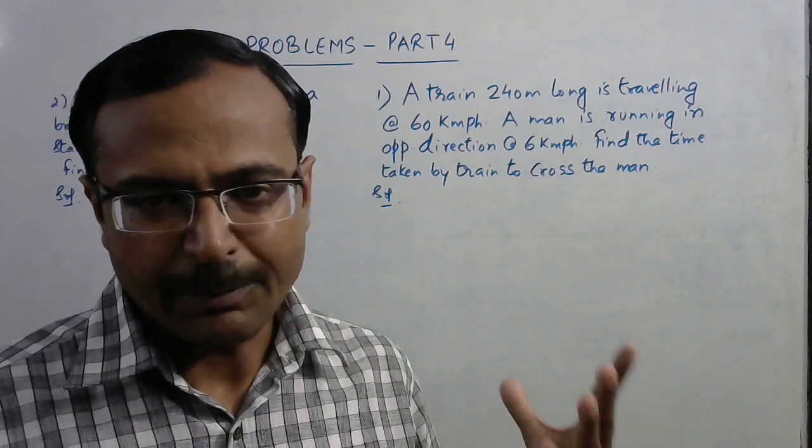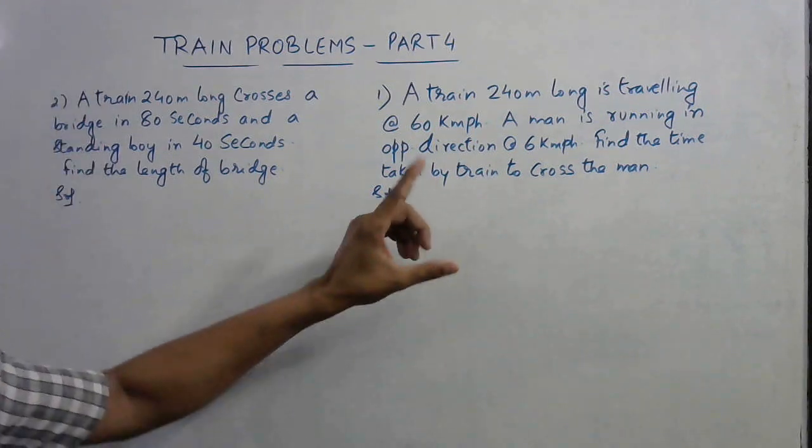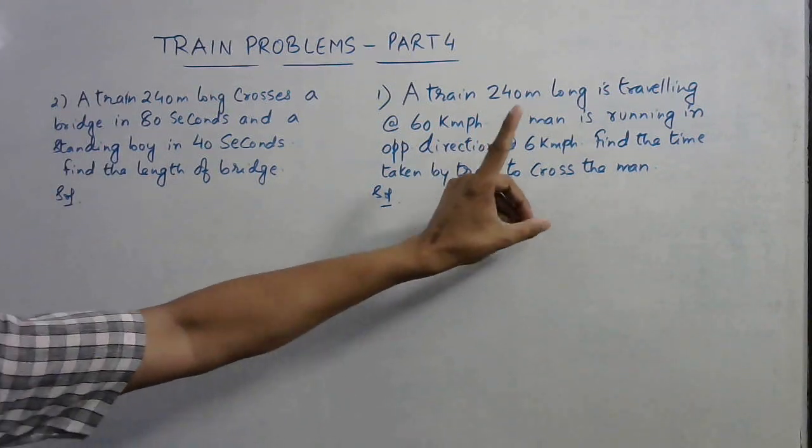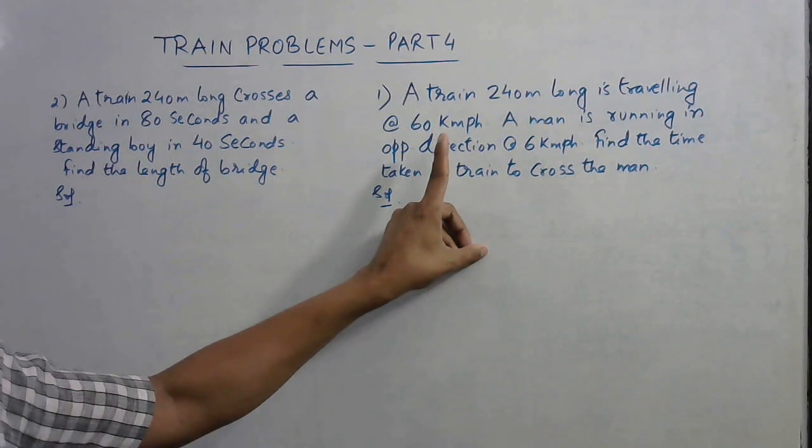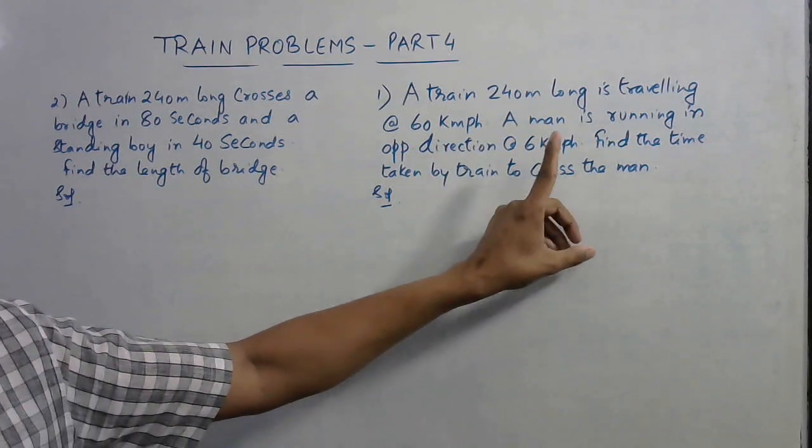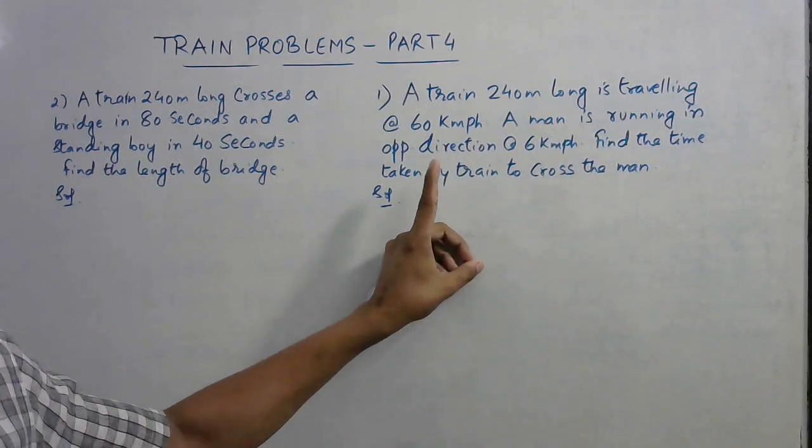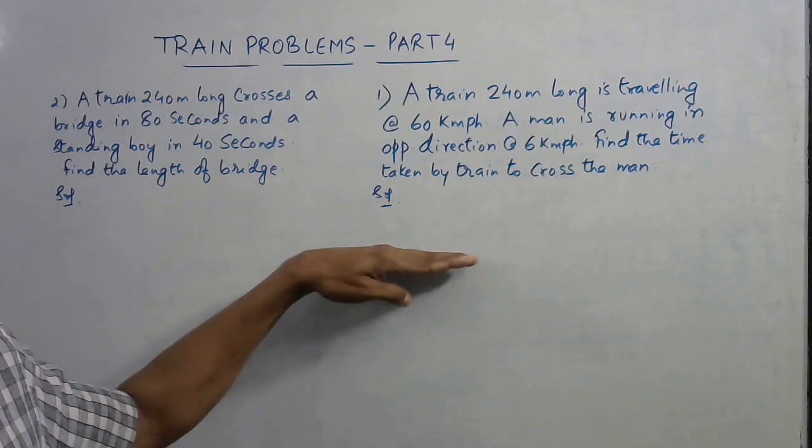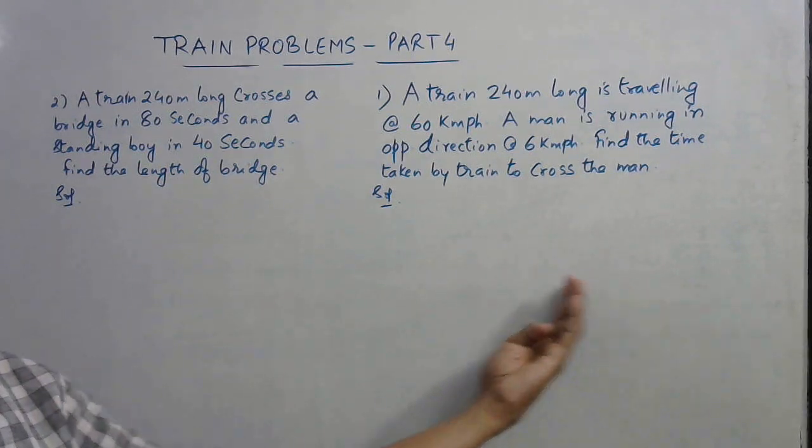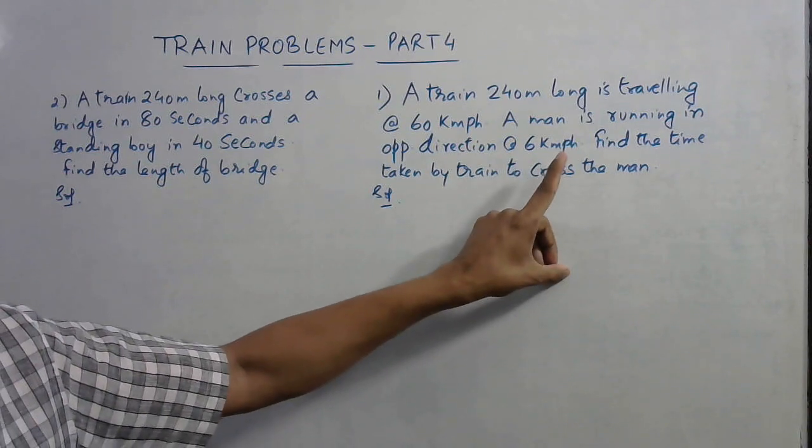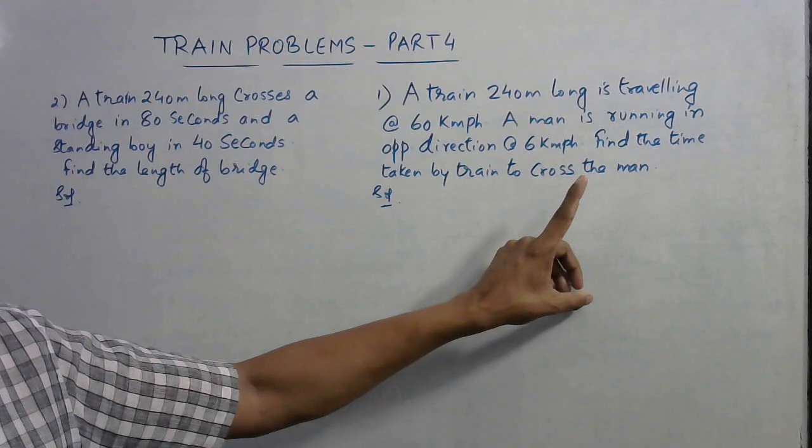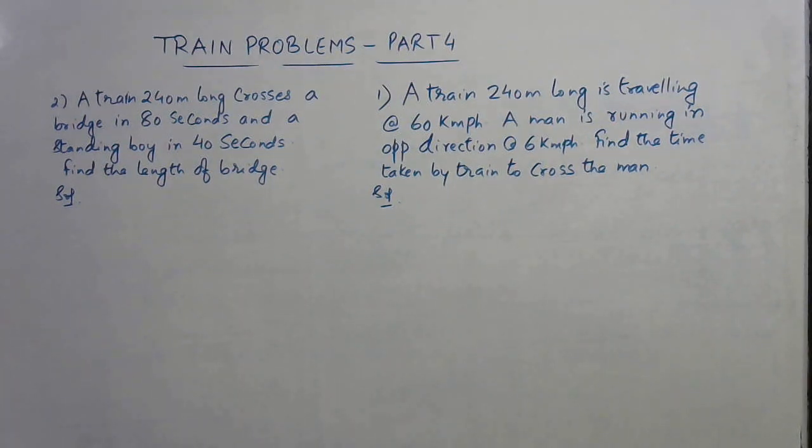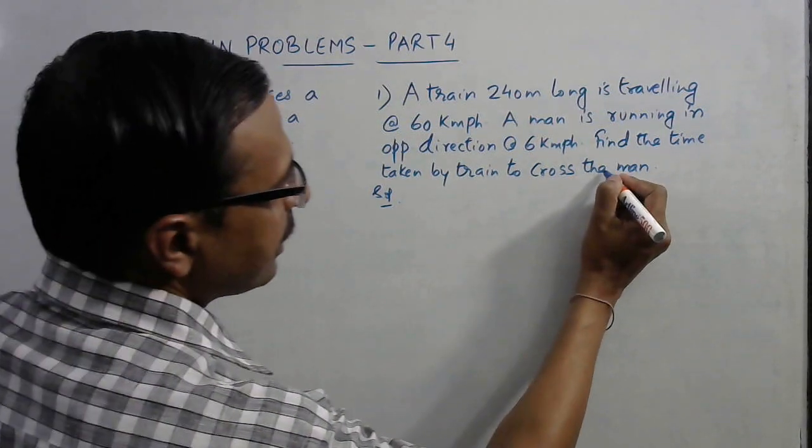The first question is: there is a train which is 240 meters long and it is traveling at the speed of 60 kilometers per hour, and there is a man who is running in opposite direction—that means if the train is going like this, the man is running like this—at 6 kilometers per hour speed. We need to find the time taken by the train to cross the man.